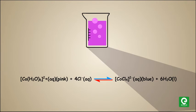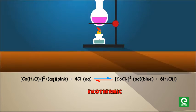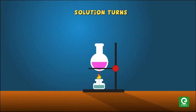In our above example of cobalt 2 ions, forward reaction is endothermic and backward reaction is exothermic. If you increase temperature, forward reaction occurs more rapidly to absorb the heat and solution turns blue.